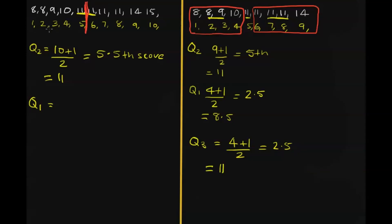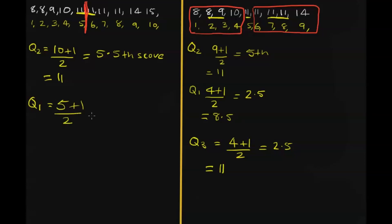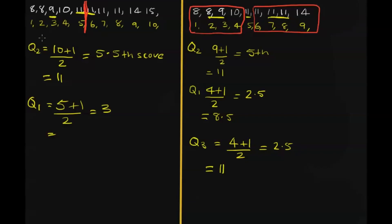Let's say the quartile 1 is going to be, because we've got five scores, is going to be 5 plus 1 divided by 2, which is equal to 3. So we're looking for the third score. And the third score is this number 9 here. So quartile 1 is 9.